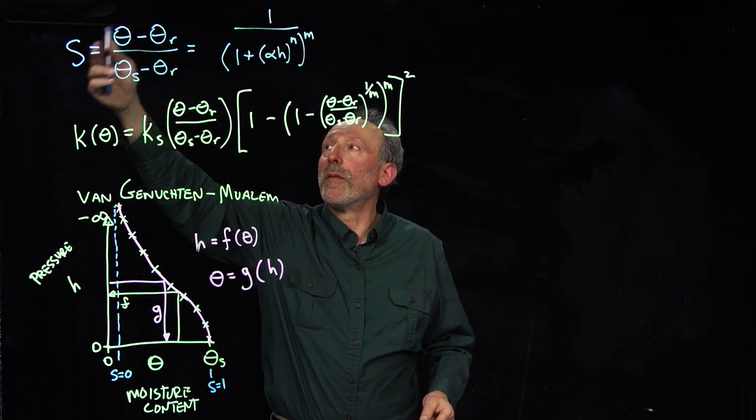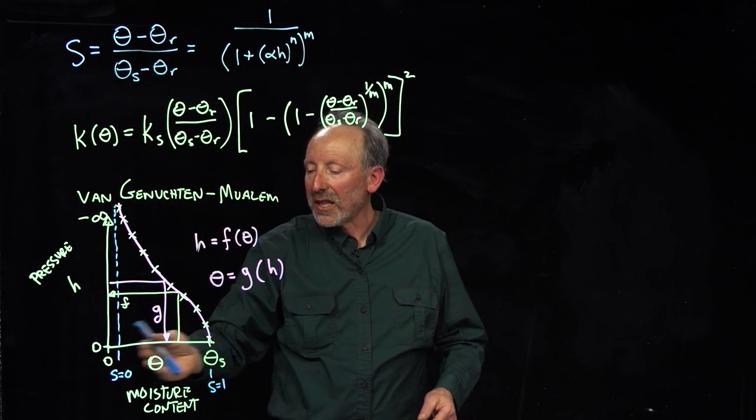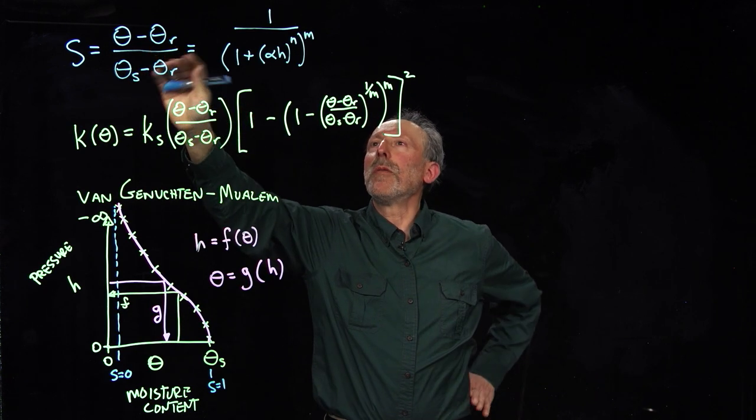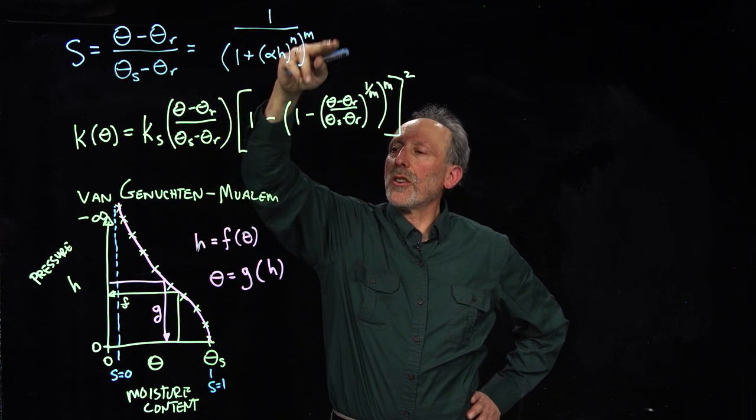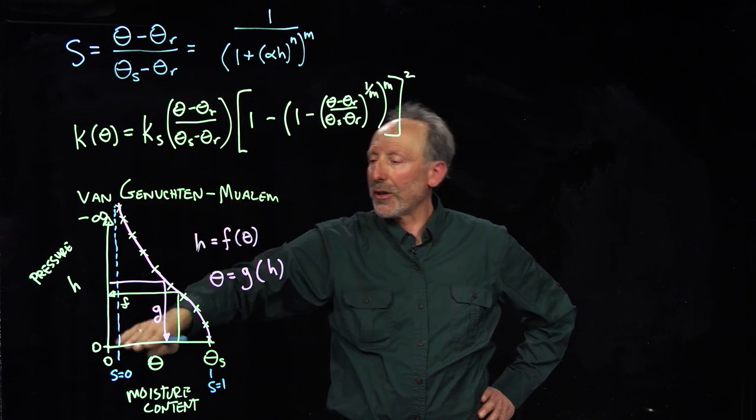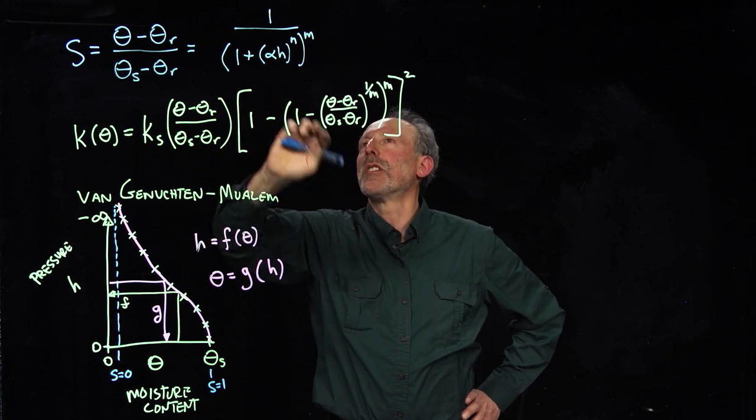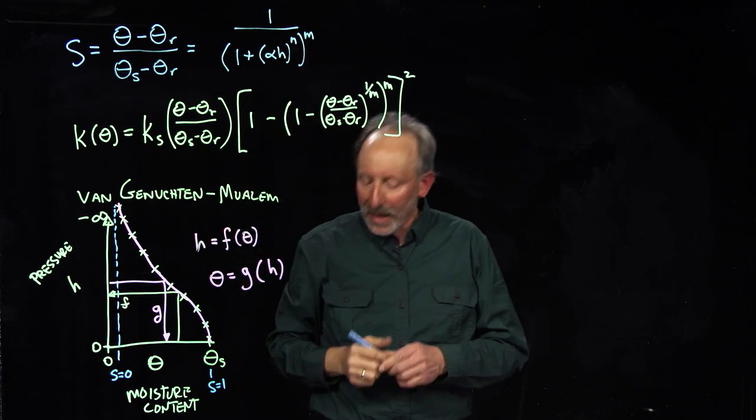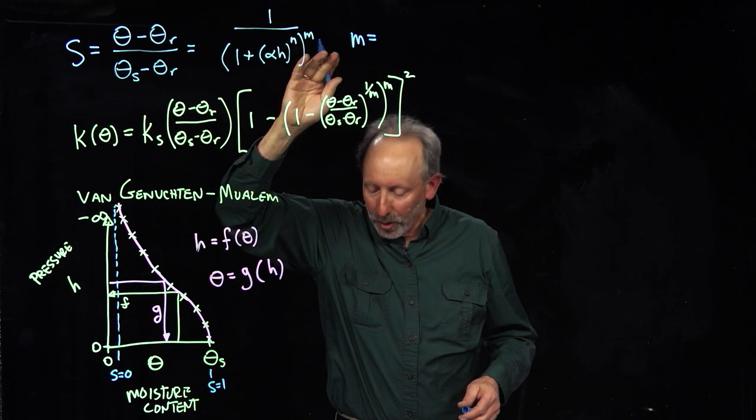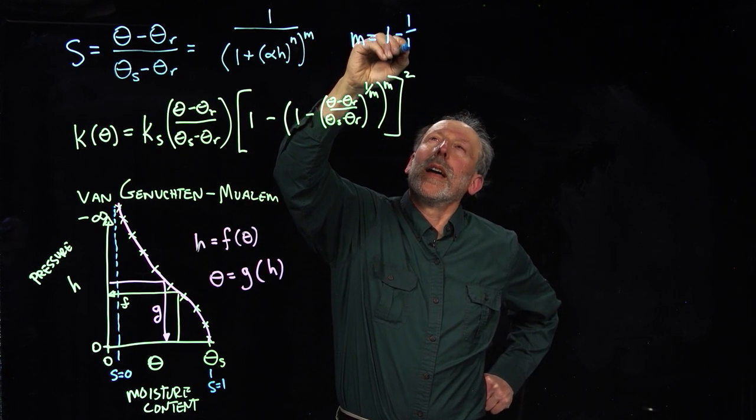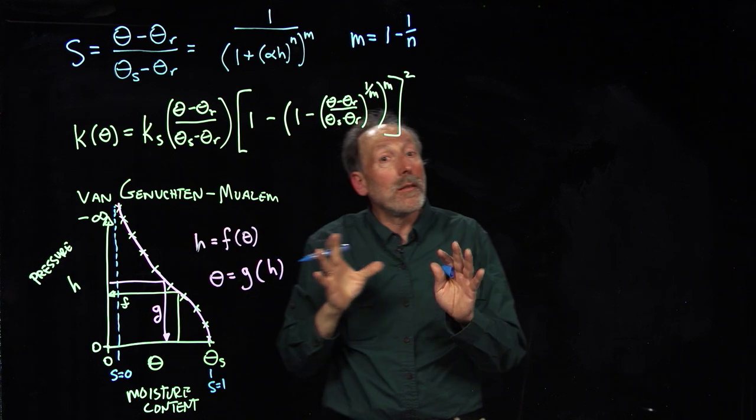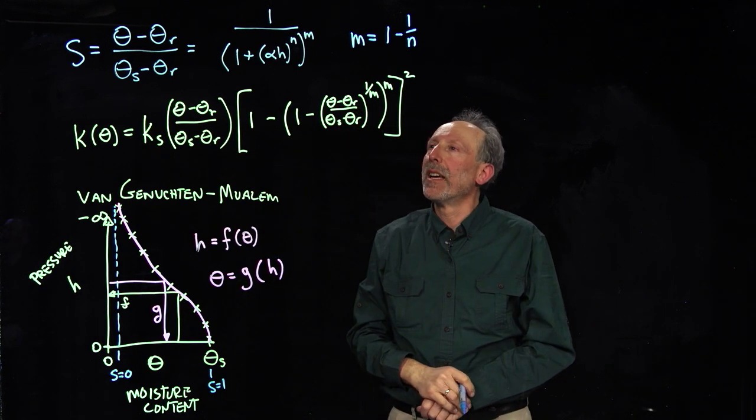And we can obviously solve for degree of saturation or moisture content. It's just a rescaling of the way to represent moisture content. And so, what would be a simple function to represent this? And it turns out this function, where we have a parameter called alpha that scales the pressure. Then we have two exponents, n and an m. And by the way, generally speaking, m is about equal to one minus one over n. So, that's a commonly taken assumption. So, here, we have m and n are really one parameter, but just two different ways of writing it.